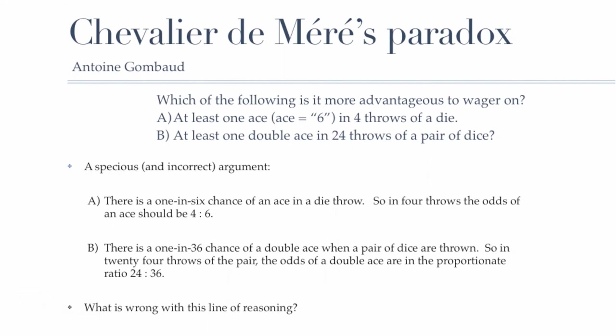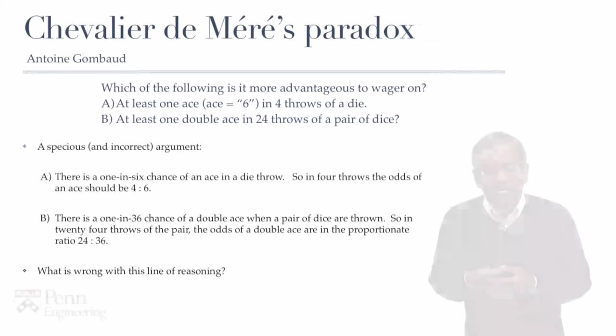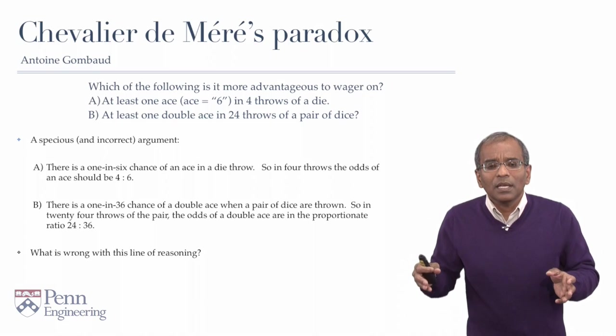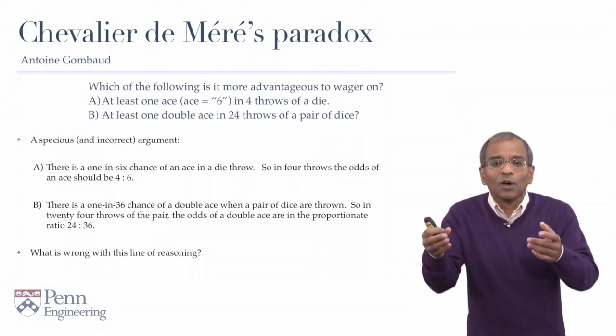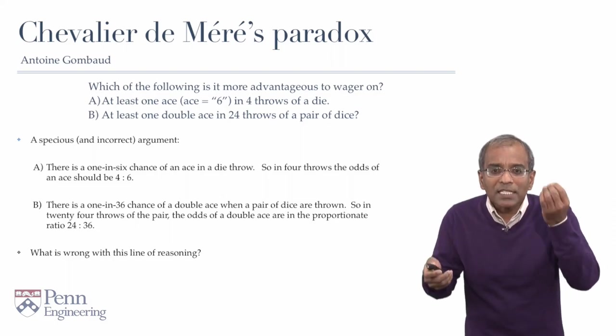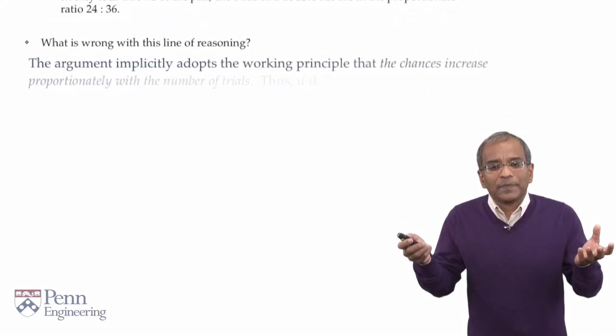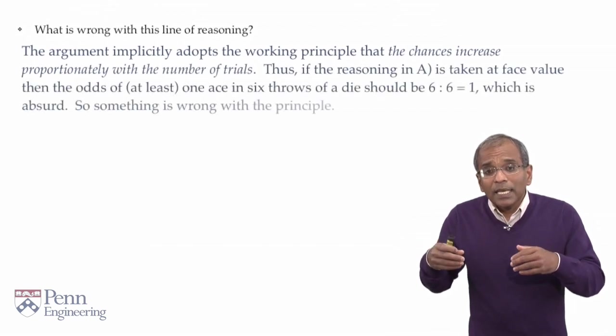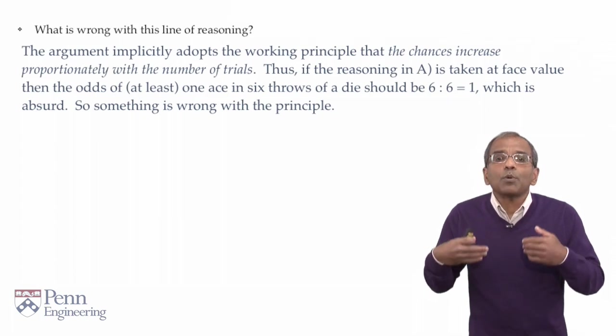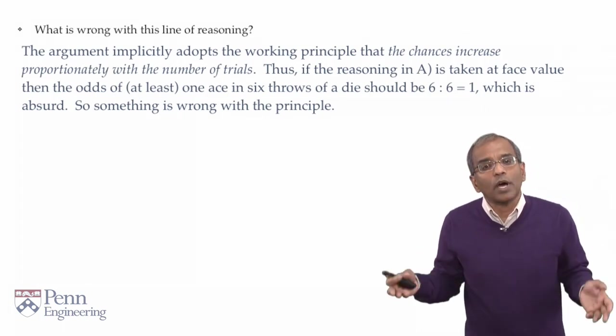Simple but incorrect. Now, this logic is in the popular literature frequently attributed to de Méré, but there are reasons to doubt whether he actually committed such a sloppy piece of analysis. One can very quickly see why an argument like this is going to break. What is the key principle at the heart of such an argument? Well, if one identifies the key central idea, it would be this, that the chance of observing a success increases proportionately with the number of trials.